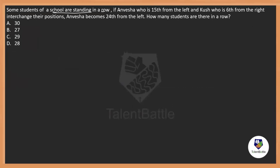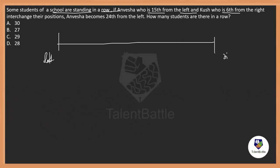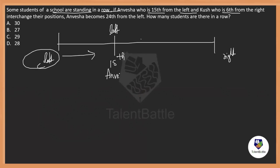Next question: some students of a school are standing in a row. Anvisha was 15th from the left and Kush was 6th from the right. Visualize a row with a left end and a right end — Anvisha is at position 15 from the left side, and Kush is at position 6 from the right side.